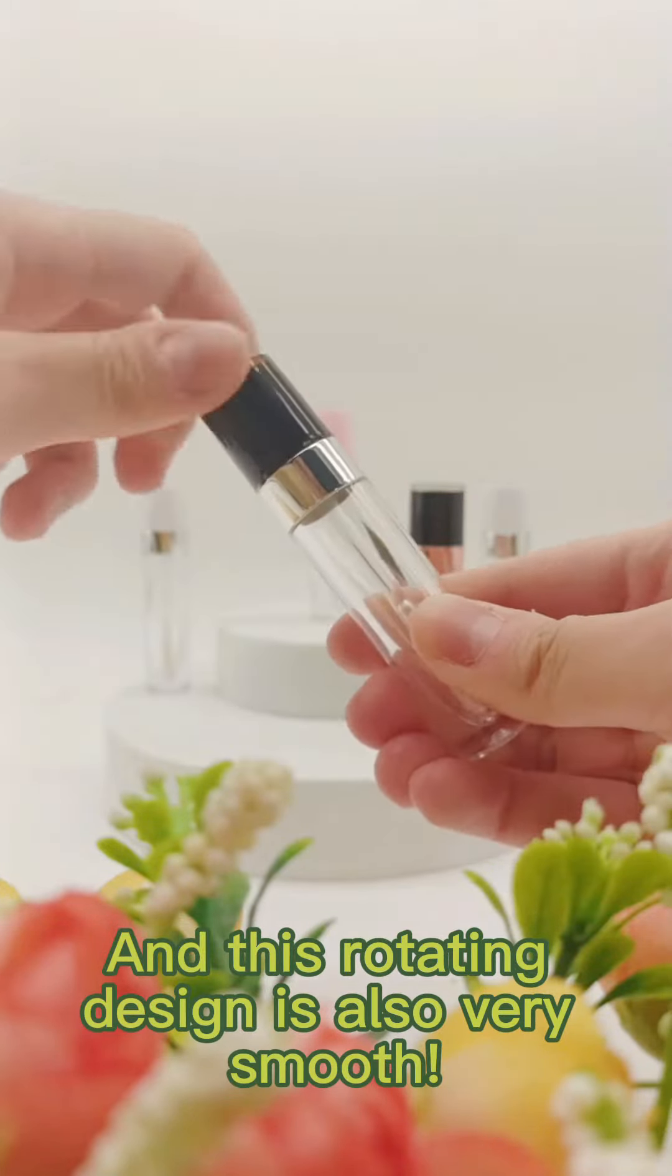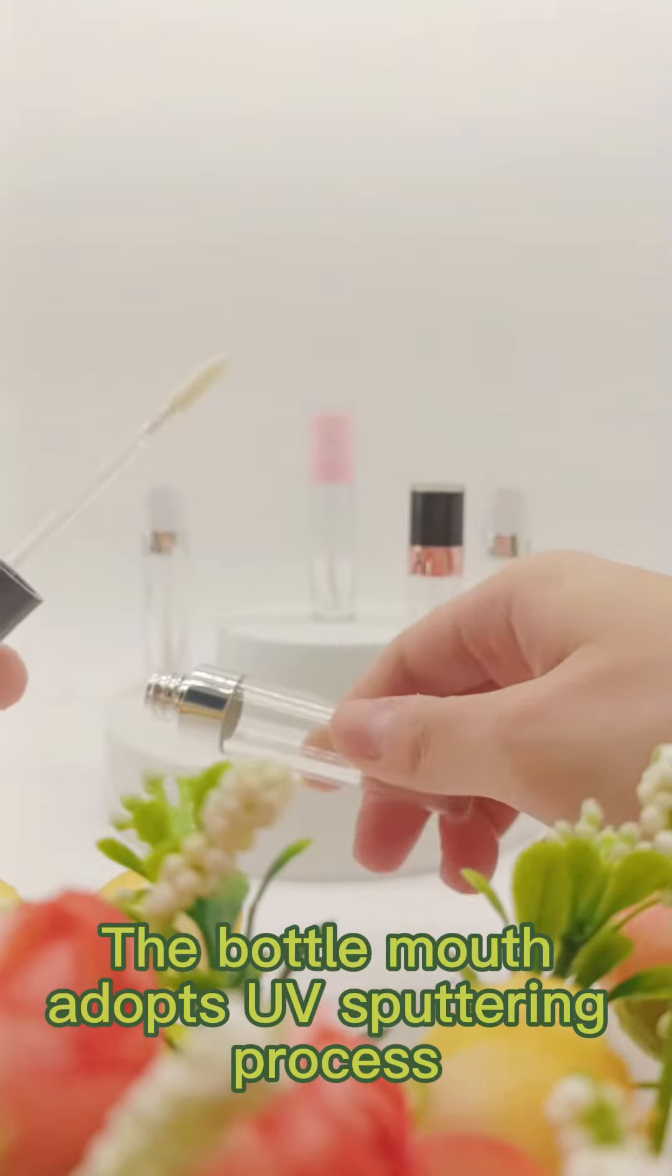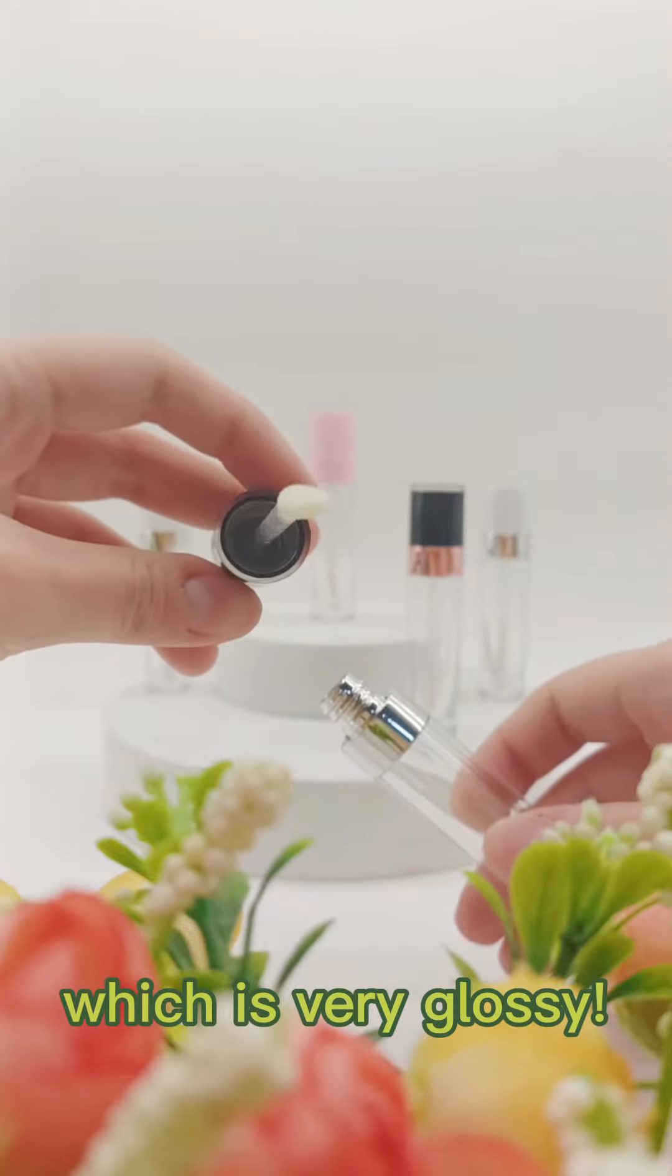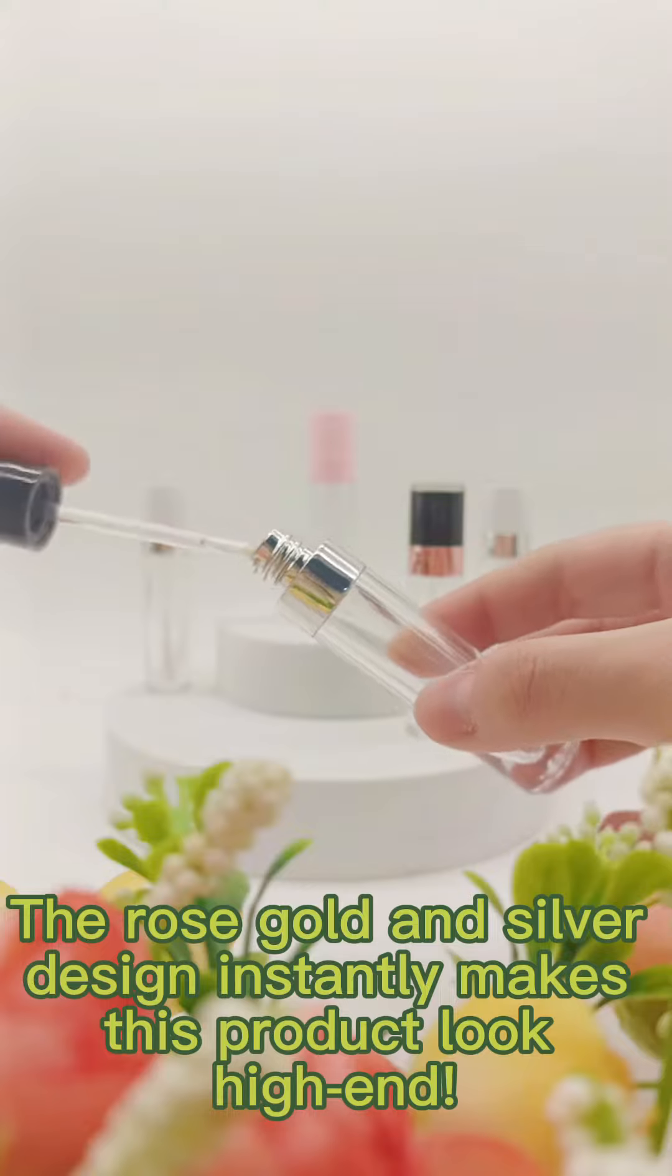This rotating design is also very smooth. Let's look at black and white. The bottle uses a plating process which is very glossy. The rose gold and silver design instantly makes this product look shiny. Let's look at the pink one. It uses an injection molding process.